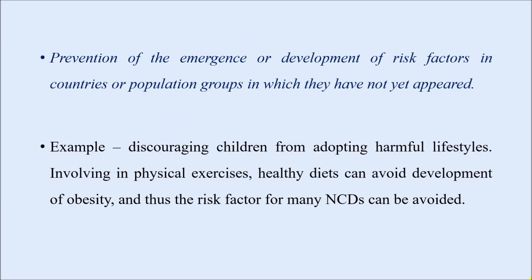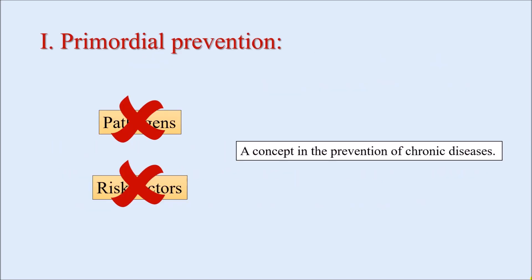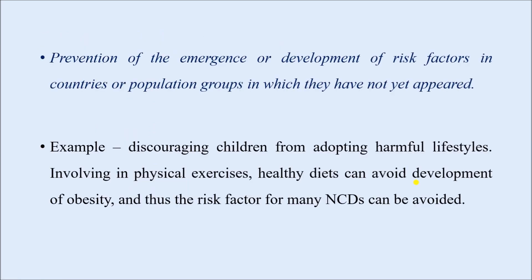Primordial prevention is a concept in the prevention of chronic diseases, especially non-communicable diseases. By definition, it is the prevention of emergence or development of risk factors in countries or population groups in which they have not yet appeared. We are talking about a group of people where risk factors are not yet present. This is more commonly a concept for non-communicable or chronic diseases. We mostly focus on risk factors to prevent non-communicable diseases, so primordial prevention is a concept mainly for NCDs — preventing the development of risk factors in populations where they have not yet developed.